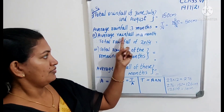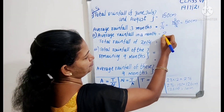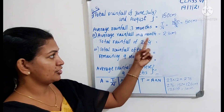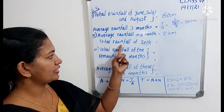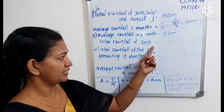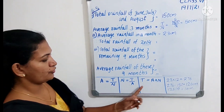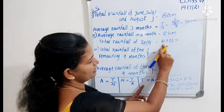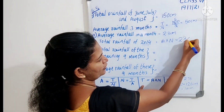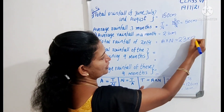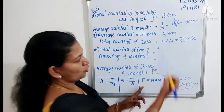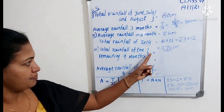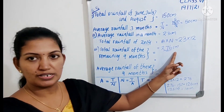Next, second question. The average rainfall per month is given in the question — that is 23 cm. We know average is 23 cm. To find the total rainfall of the whole year 2014, we use: total is equal to average multiplied by number. Average is 23 and number of months in a year is 12, so 23 multiplied by 12 is equal to 276 cm. The total rainfall of 1 year is 276 cm.